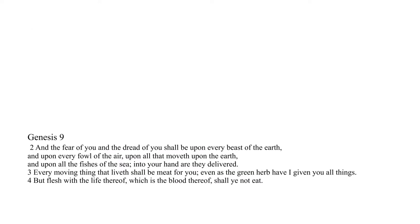In chapter 9, verses 2 to 4, God puts the fear of man into every animal and allows the eating of meat, with the stipulation that blood not be eaten. 'The fear of you and the dread of you shall be upon every beast of the earth, and upon every fowl of the air, upon all that moveth upon the earth, and upon all the fishes of the sea — into your hand they are delivered. Every moving thing that liveth shall be meat for you, even as the green herb I have given you all things. But the flesh with the life thereof, which is the blood thereof, you shall not eat.' This is a big change from pre-flood times.